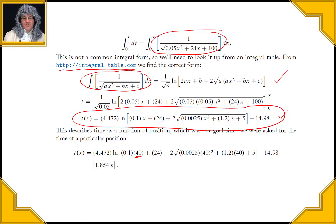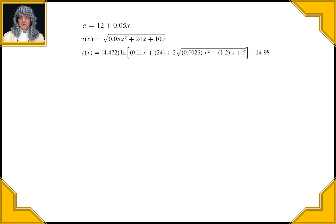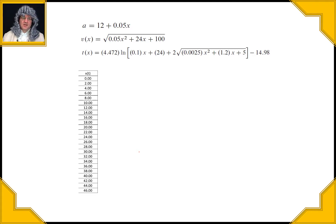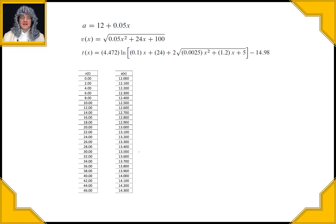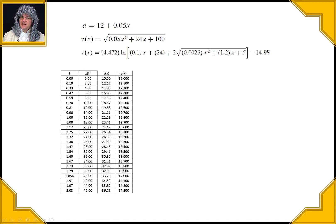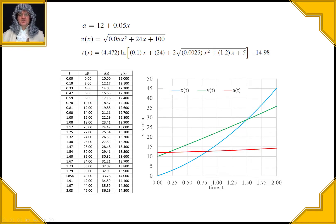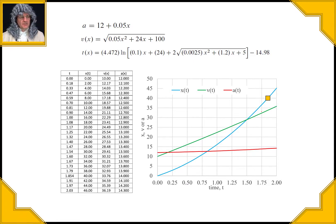Since we want the time at position x equals 40 meters, we just plug 40 into our time equation and find t equals 1.854 seconds. A really good idea is to graph all three equations together as functions of position — using a spreadsheet — and then plot position, velocity, and acceleration all versus time. This gives a full picture of the motion taking place.